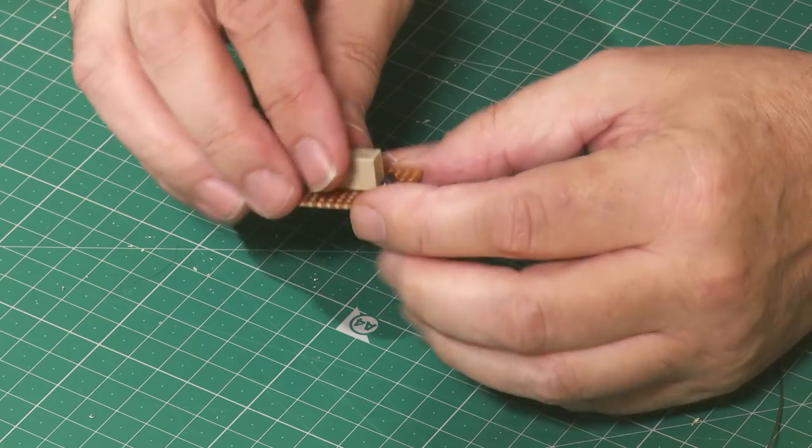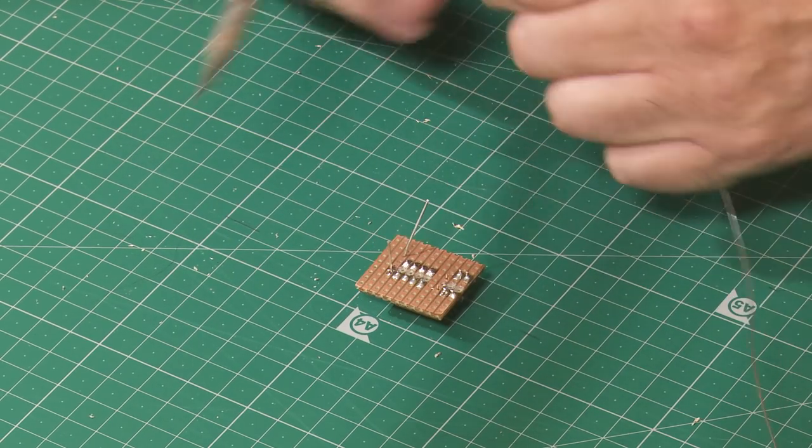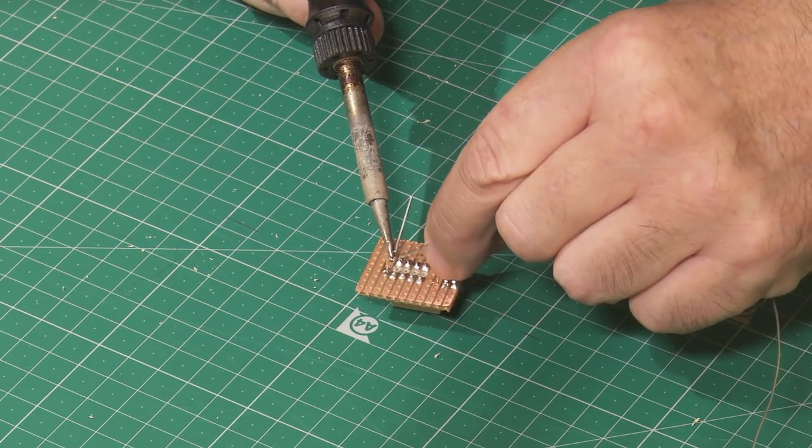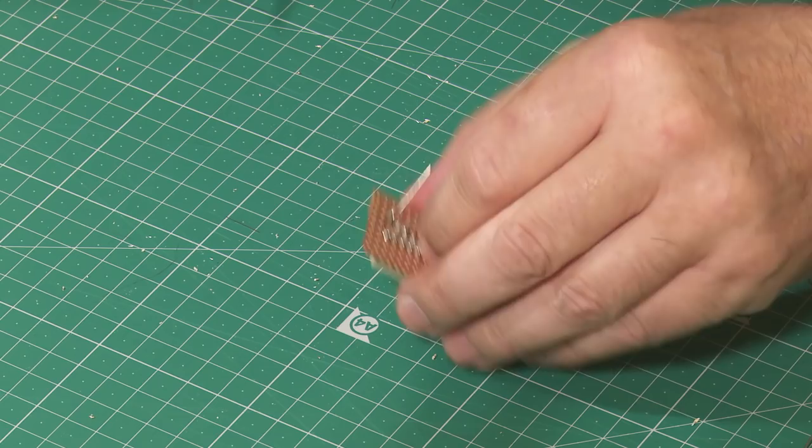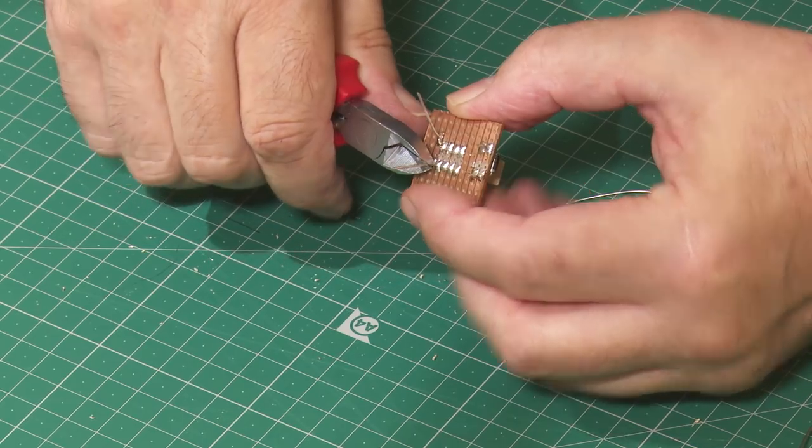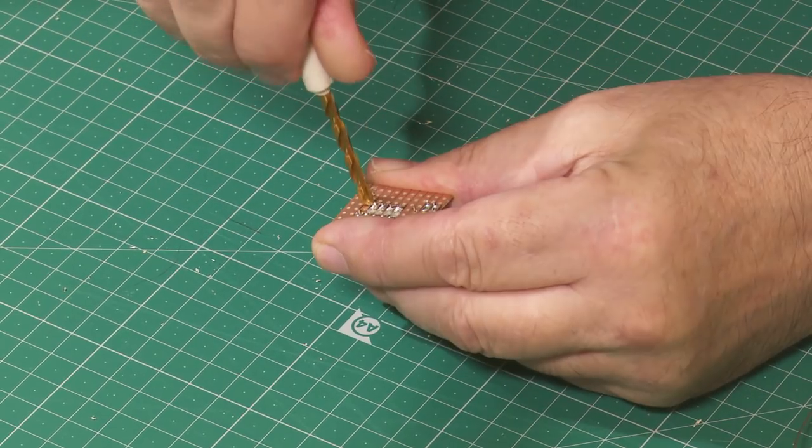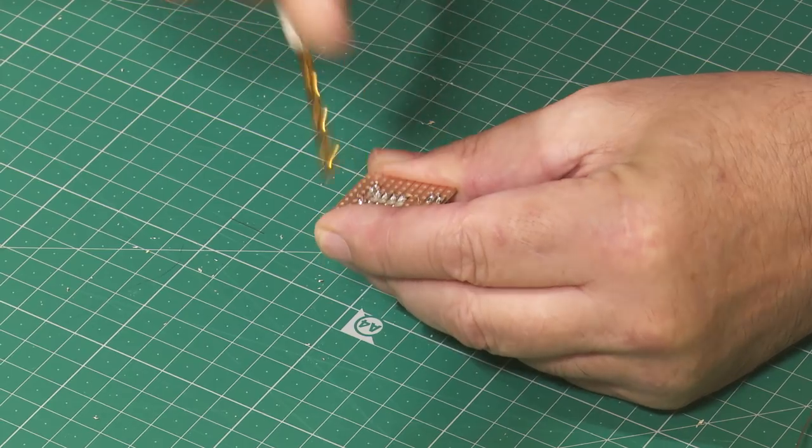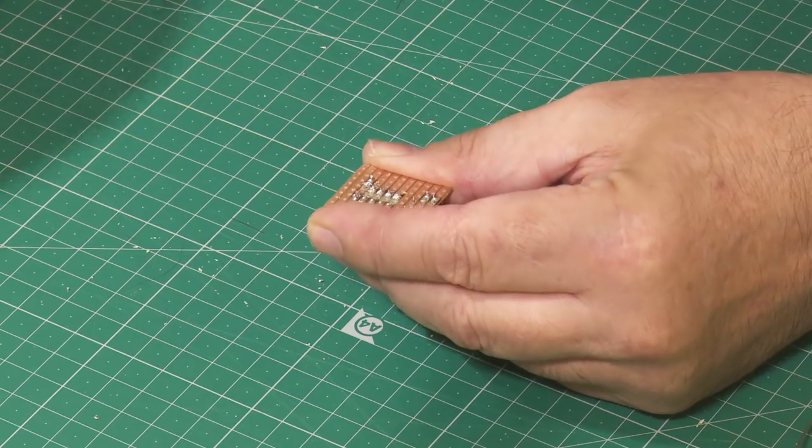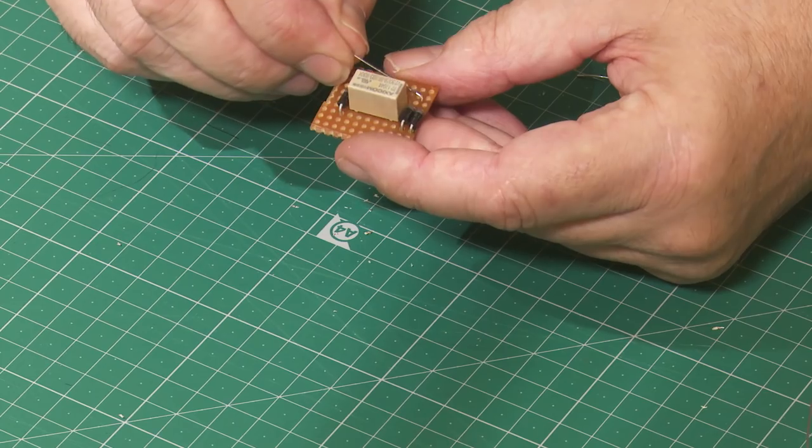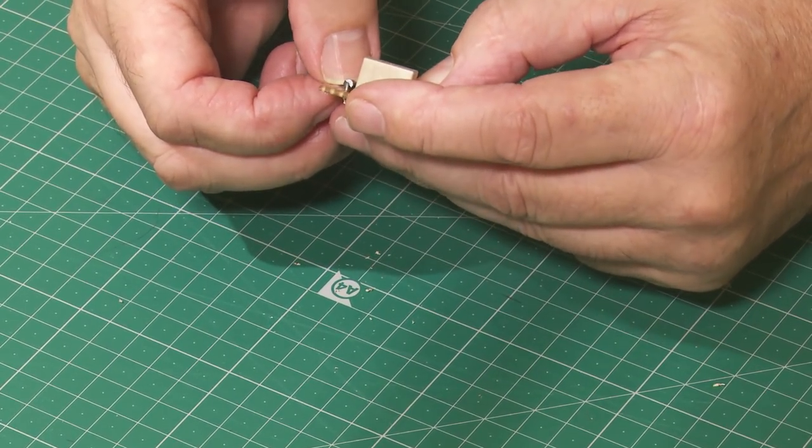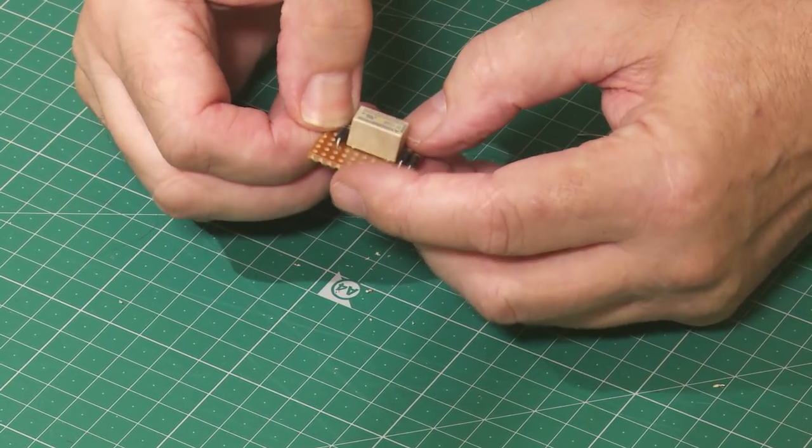The same procedure is then carried out on the third diode. Next we make a shorting link from an old resistor leg and then solder that into place.